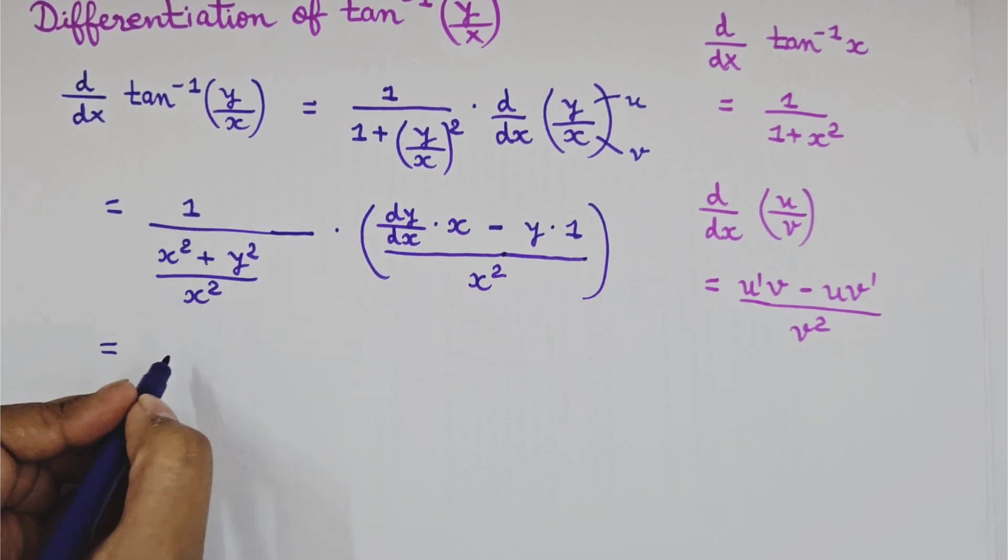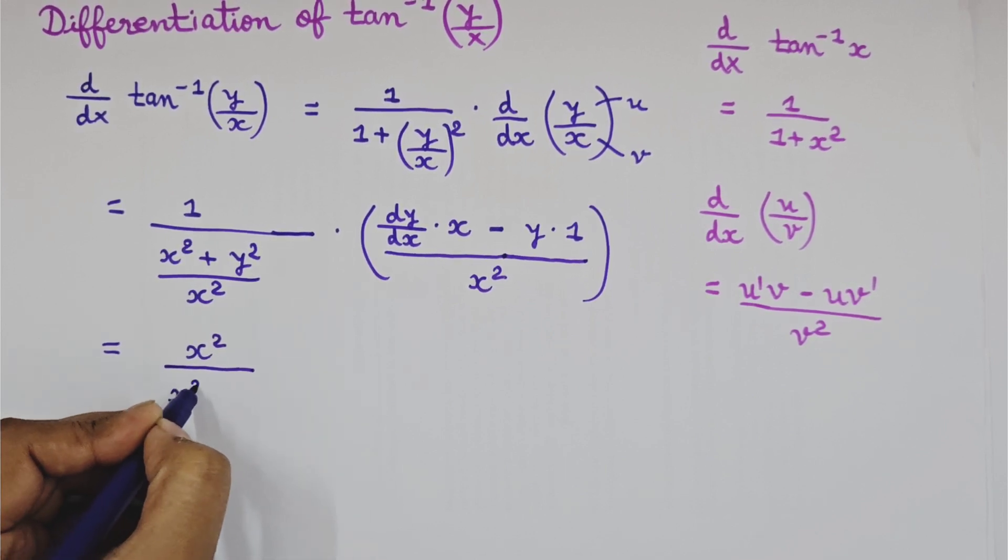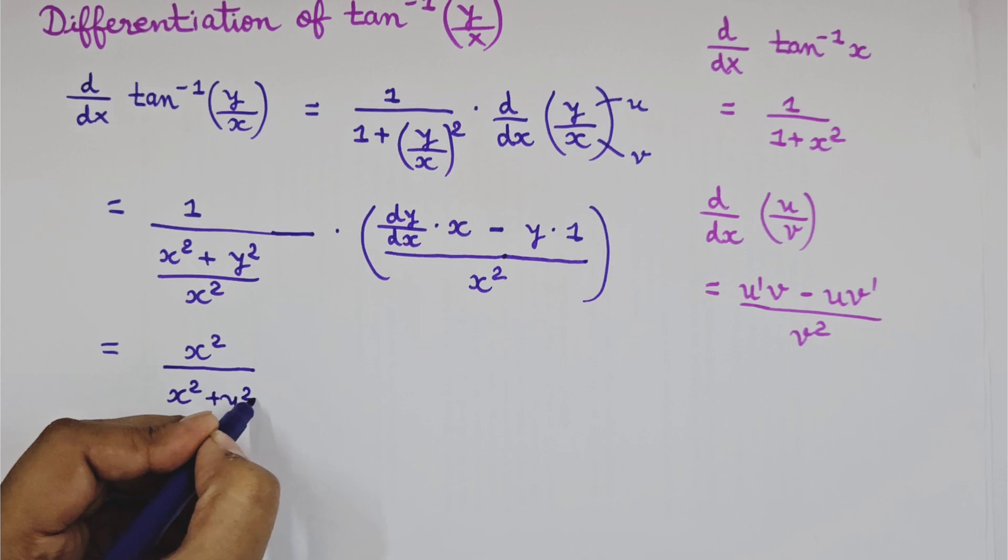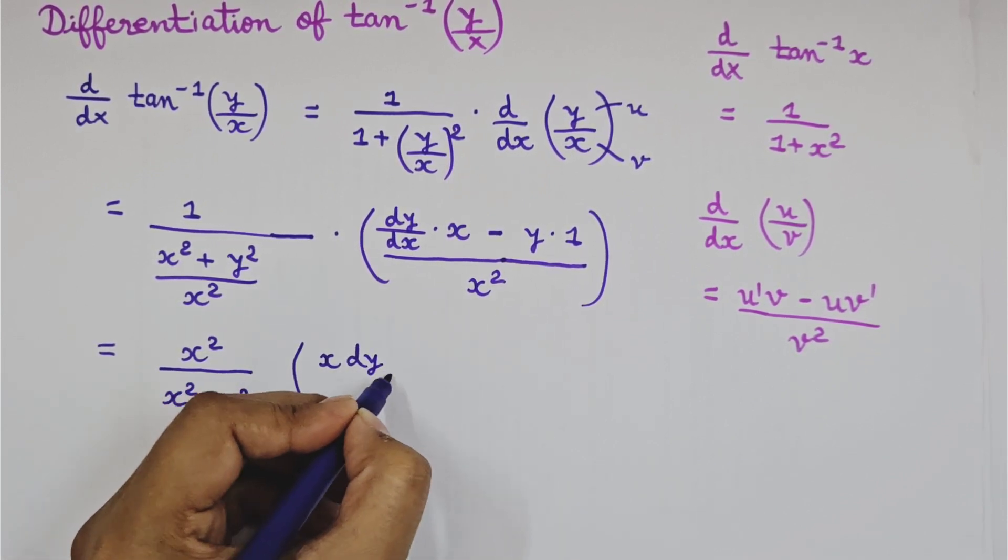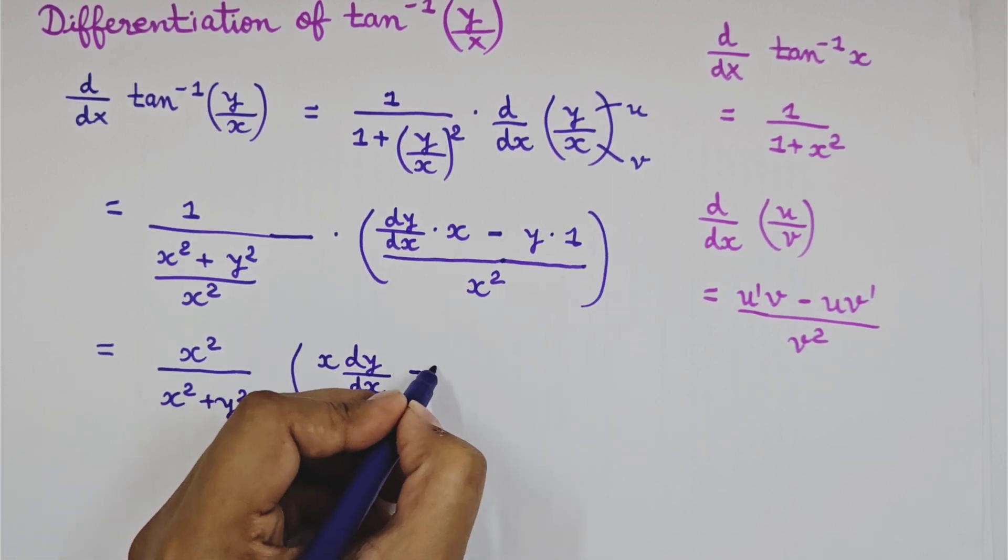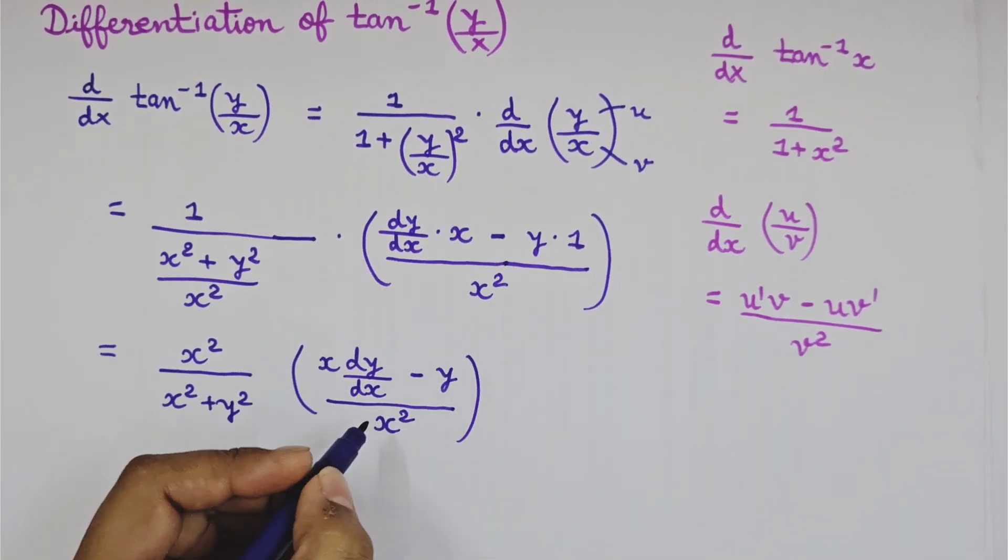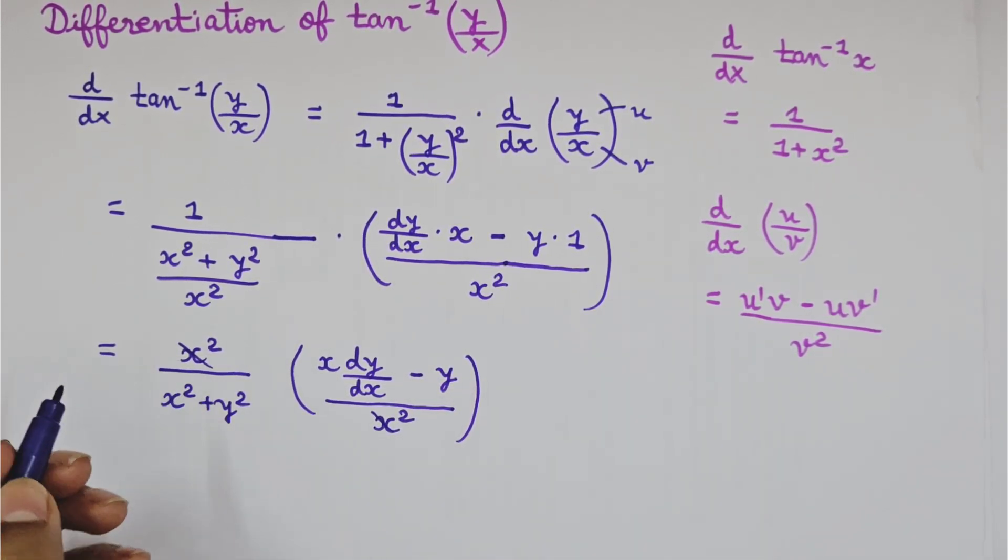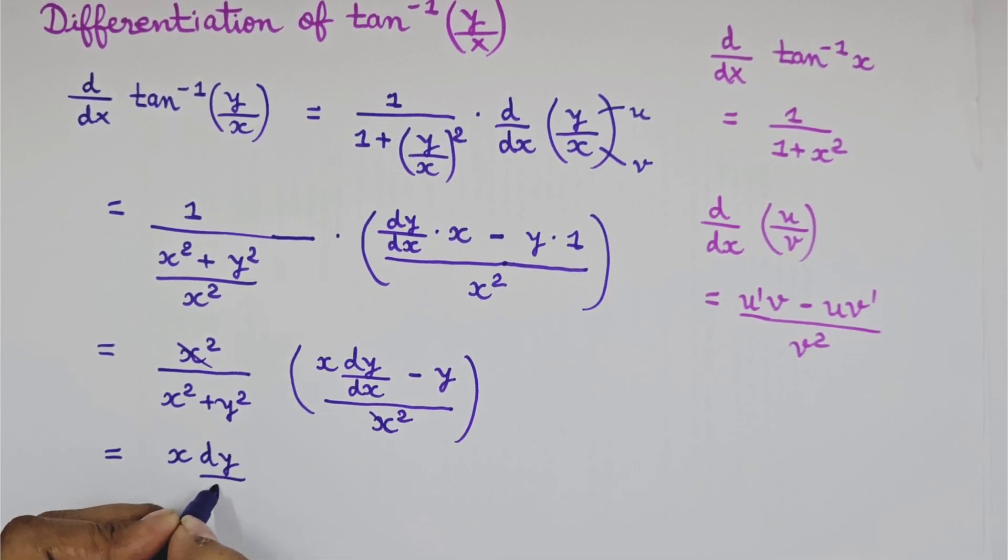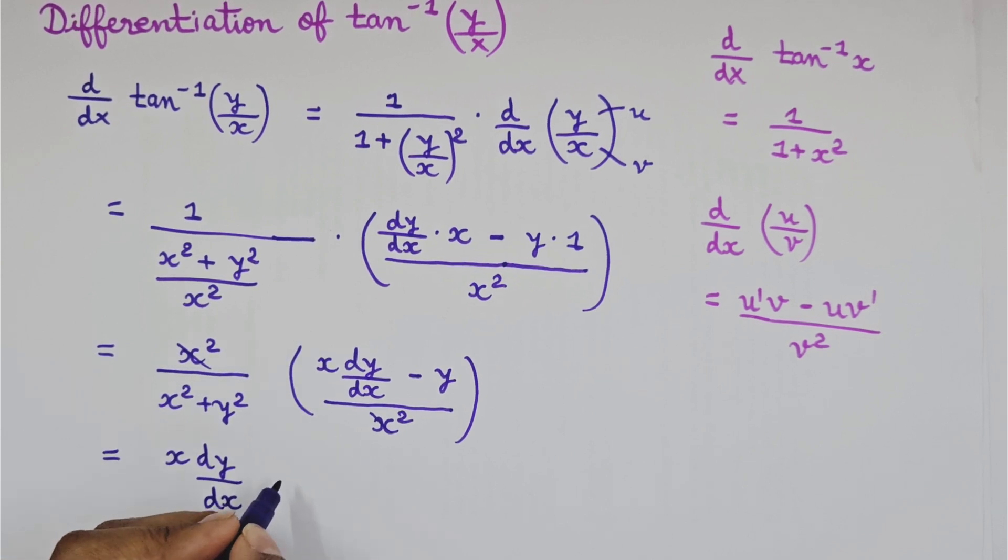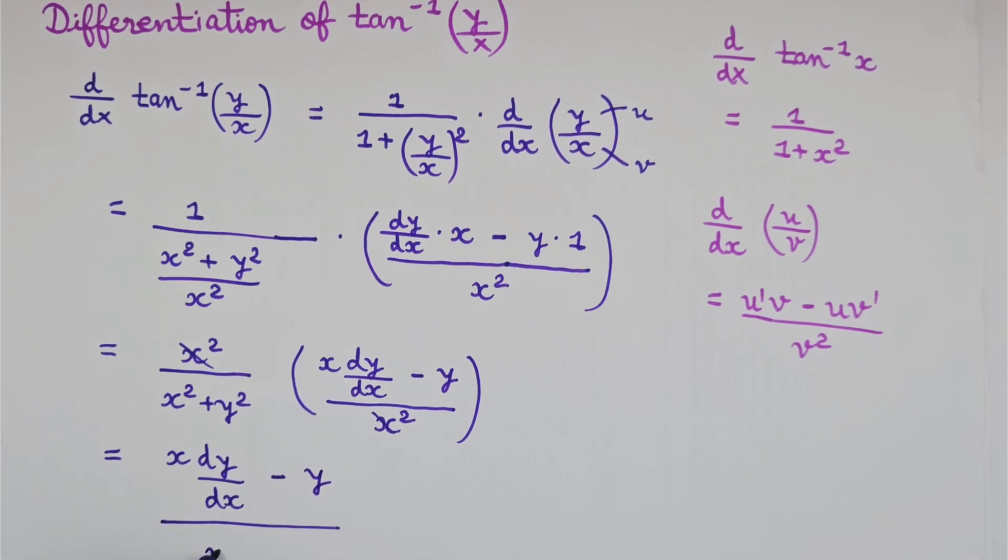This x square will be in the numerator. So it will be x square upon x square plus y square into we have this which we'll write it as x dy by dx minus y upon x square. Here we can see that x square x square will get cancelled. We'll get x dy by dx minus y upon x square plus y square.